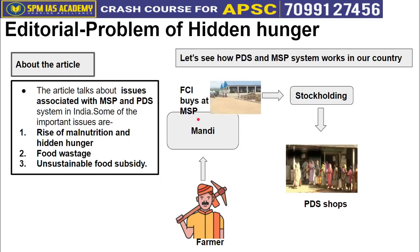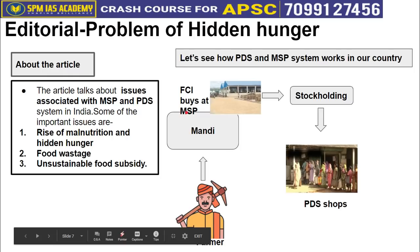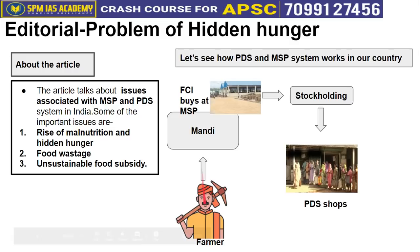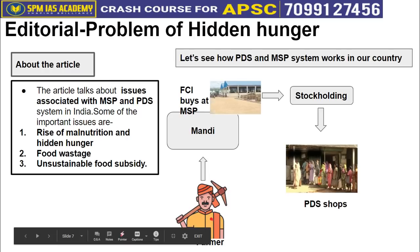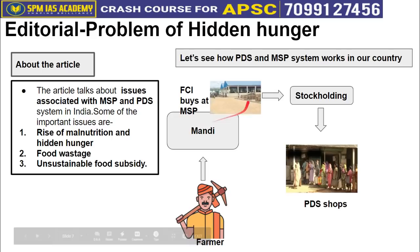MSP was meant to be a price insurance — a minimum below which grain wouldn't be sold — so it should be lower than the market price. But it has become a political tool for collecting farmers' votes. Over the last 3-4 decades, MSP has been generally higher than the market price, so private buyers cannot match it, and almost all food grain produced ends up being sold to FCI at MSP.